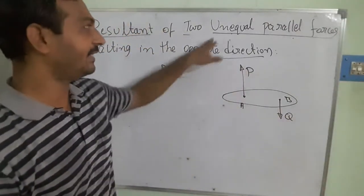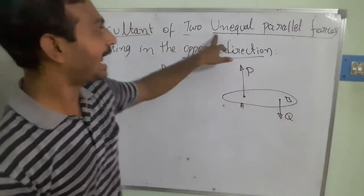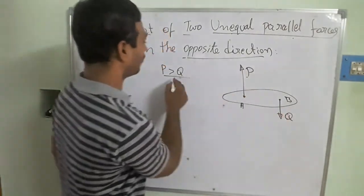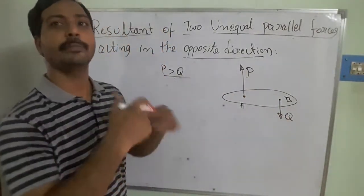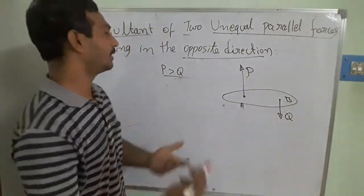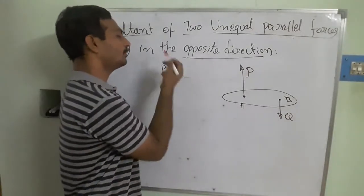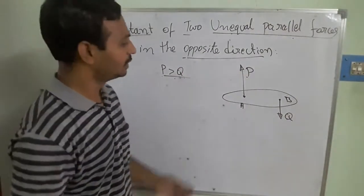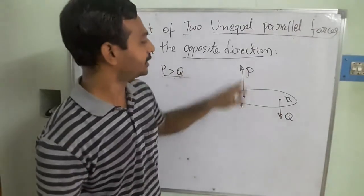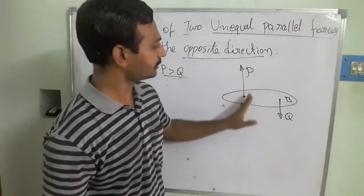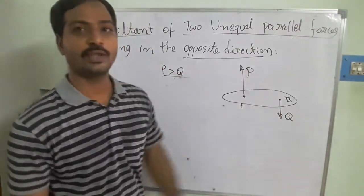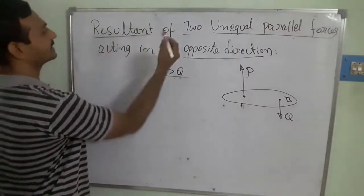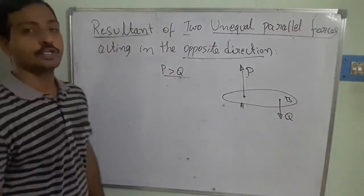We have satisfied the given conditions: they are unequal parallel forces where P and Q are not equal — one force is greater than the other. They are in opposite directions, one moving upward and one moving downward. We need to find out where the resultant component exists.